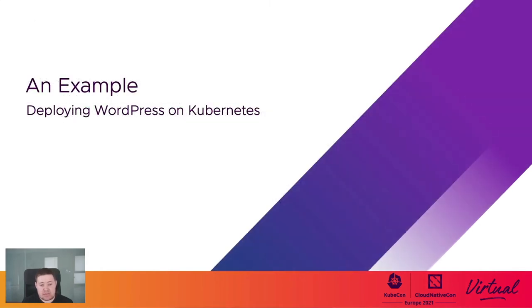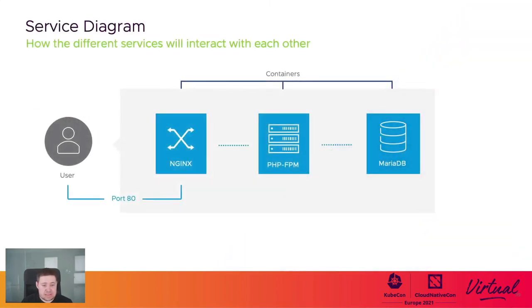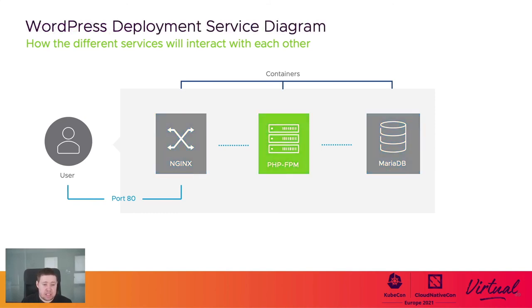Now that we have seen all the steps involved in deploying an application in Kubernetes, including how to build a good container image and a good Helm chart, let's see a real-world example. We are going to describe how to deploy WordPress on Kubernetes following some of the best tips and practices mentioned in this talk. The user will connect to the HTTP port of an NGINX container, which will then communicate any request to PHP-FPM via a proxy, using the MariaDB container as a database. The only container we will focus on for this talk is the one that executes the WordPress application — the PHP-FPM container.